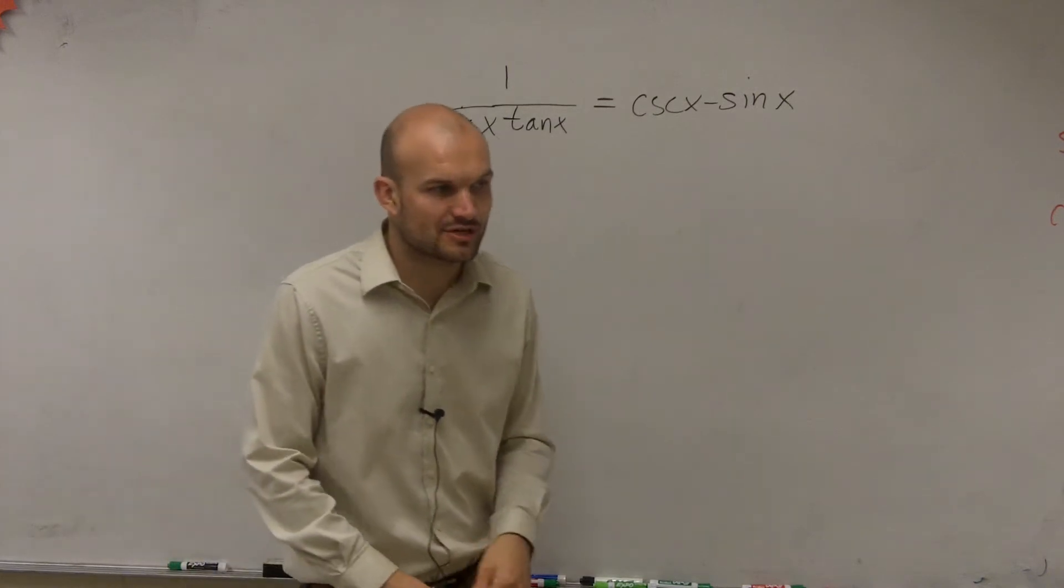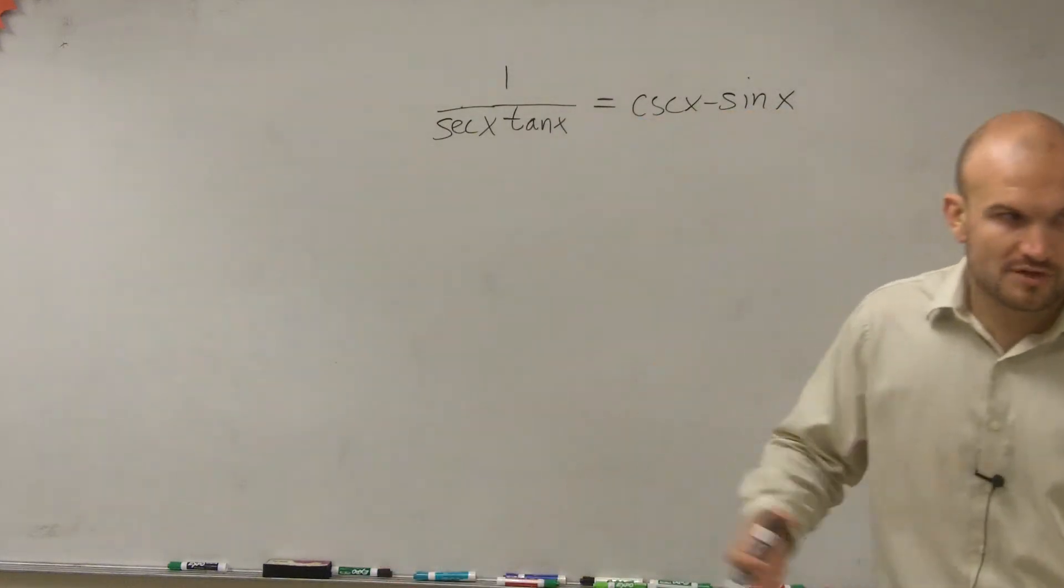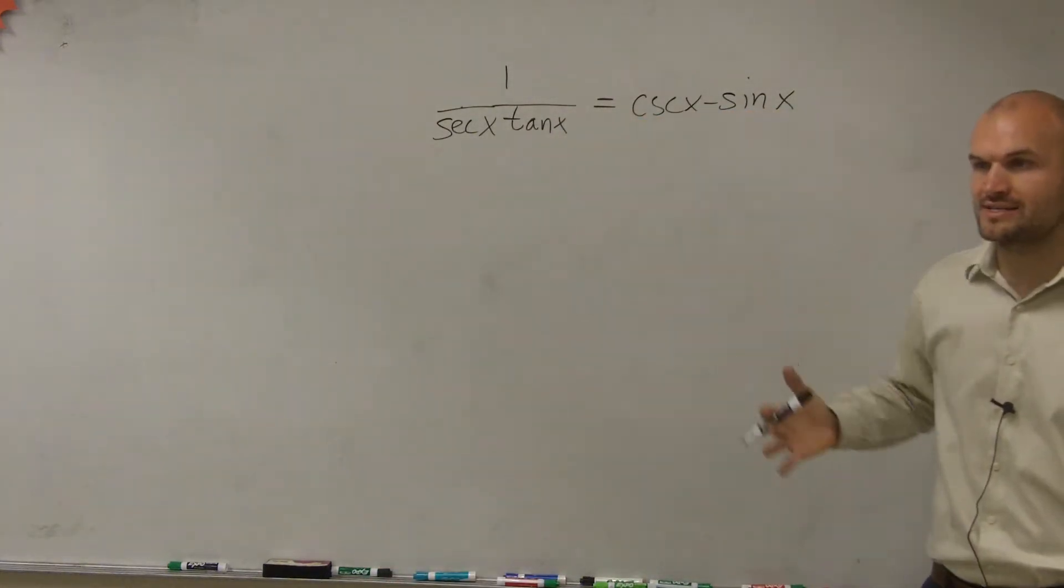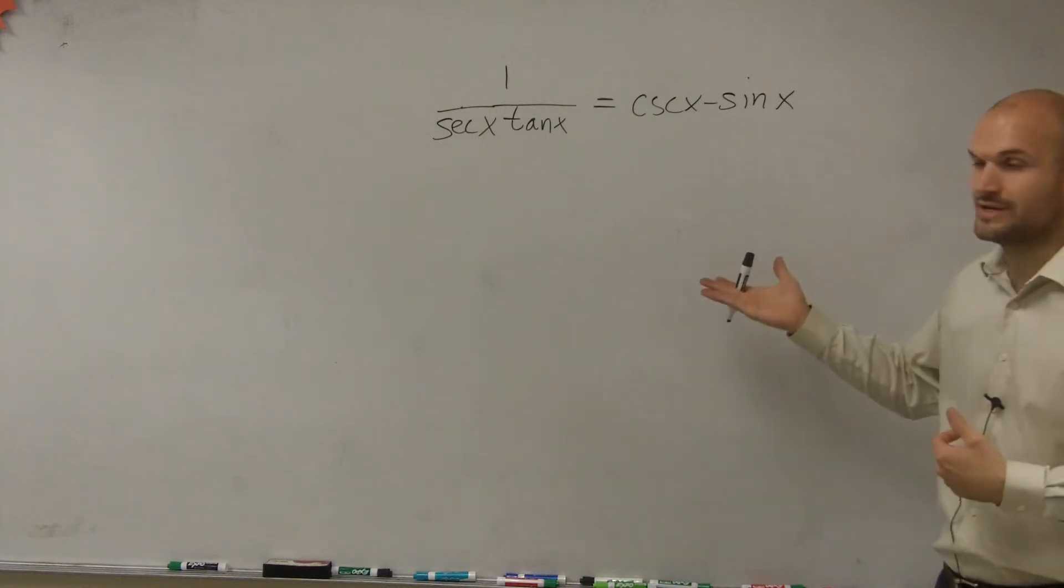Now remember, when solving our trigonometric identities, we have that step-by-step process that we want to work on. The first thing is to pick a side, either the left or the right side, to eliminate. So I have one student saying left side, one student saying right side.